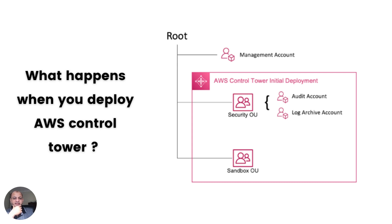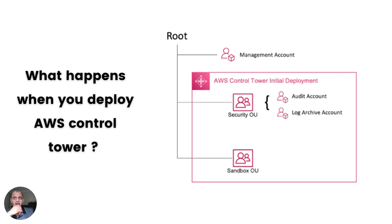When you deploy AWS Control Tower, two organizational units are created. One is called the Security OU and one is called the Sandbox OU. Within the Security OU, you'll get two AWS accounts: a log archive account and an audit account. The log archive is used for centralized logging, and the audit account is for auditing. You'll get around 32 guardrails already configured — I think 32 preventative and 30 detective guardrails to prevent violations. You'll also get SSO configured, Account Factory configured, and a management account — the landing zone. Usually organizations start off like this and then grow based on the great practices Control Tower has put in place.